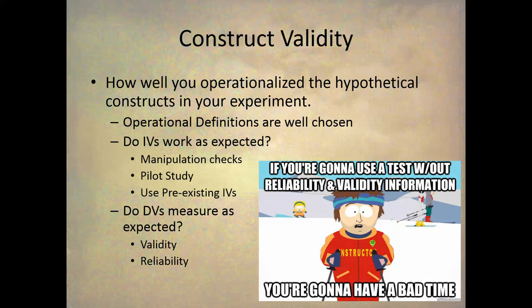With the independent variable, we want to know if the IV and its operational definition worked as intended. There are several ways to do that. The first is a manipulation check — you actually check at the end of the experiment whether or not people noticed or responded to the manipulation. In the case of the test feedback, you could give them a short mood inventory, and hopefully subjects in the positive feedback condition would be in a better mood than those in the negative feedback condition.